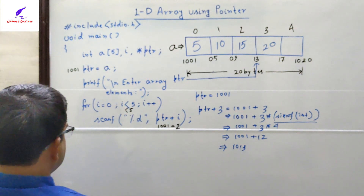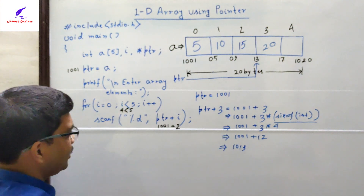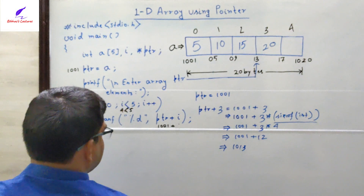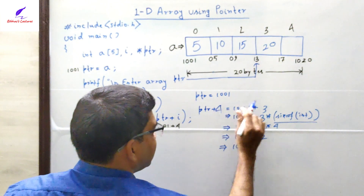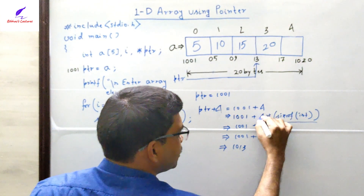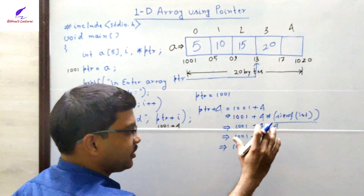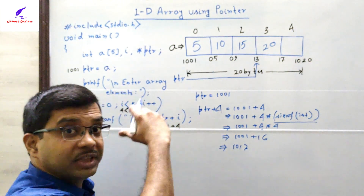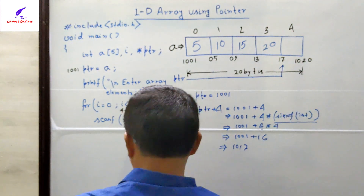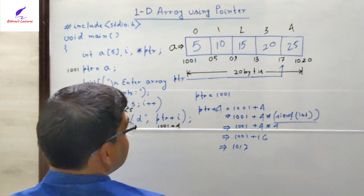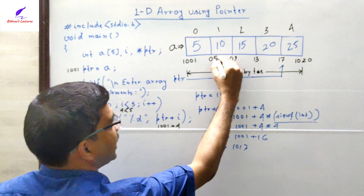For the last iteration, i = 4, so ptr + 4 = 1001 + (4 × 4) = 1001 + 16 = 1017. The pointer moves to location 1017, the address of the last element, and value 25 is stored there. In this way, by incrementing the pointer, we reach each successive location and store the corresponding value.